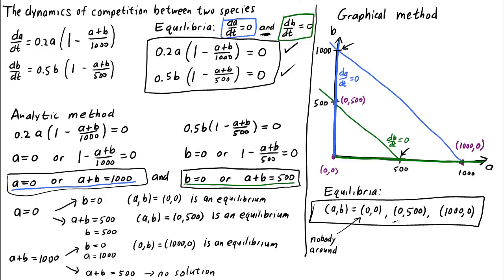The second equilibrium, (0,500), corresponds to species B winning. In that case, there aren't any individuals in species A, and species B is at its carrying capacity 500.